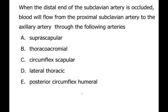This is a straightforward question: when the distal part of the subclavian artery is blocked, blood flows from the proximal subclavian to the axillary artery through the following arteries - suprascapular, thoracoacromial, circumflex scapular, posterior circumflex humeral. Lateral thoracic is the incorrect option; all other branches listed are correct.